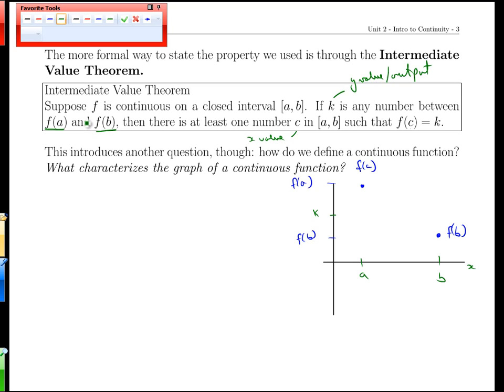The Intermediate Value Theorem says, all right, if the function is continuous from a to b, then somewhere along the way, we must cross this horizontal line. We cannot get from here to here if we're continuous without eventually, yeah, I got to cross. If I'm going to get from here to here, I've got to cross that line.